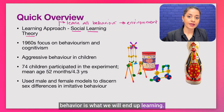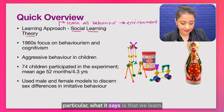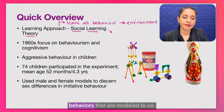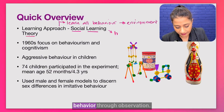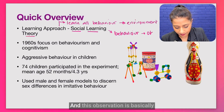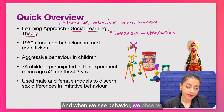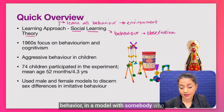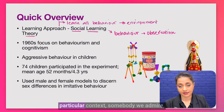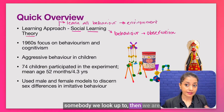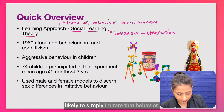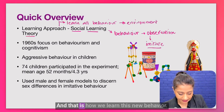Whatever the environment shows us and whatever consequences it offers for our behavior is what we will end up learning. Social learning theory in particular says that we learn behaviors that are modeled to us — in other words, we pick up on behavior through observation of the people around us. When we see behavior in a model who is particularly influential, someone we admire or look up to, then we are likely to imitate that behavior.